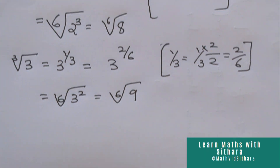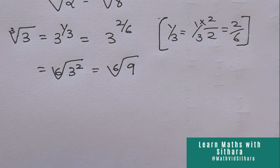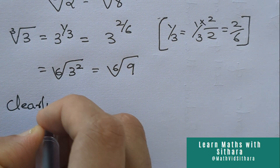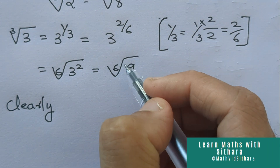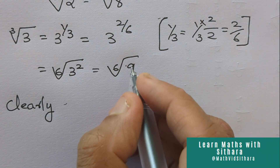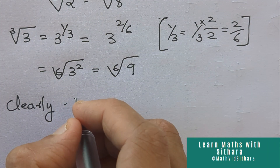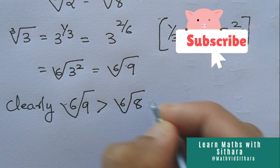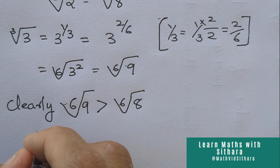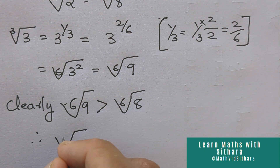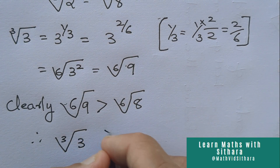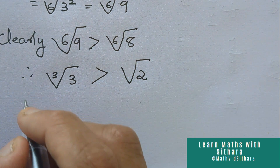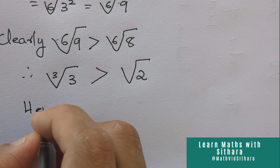Since 9 is greater than 8, clearly the 6th root of 9 is greater than the 6th root of 8. Therefore, we can say that cube root of 3 is greater than root 2. Hence we have found out which one is greater — that is, cube root of 3.